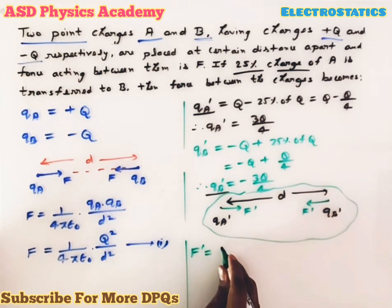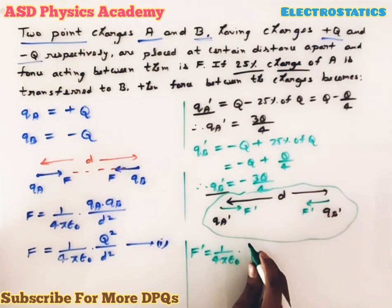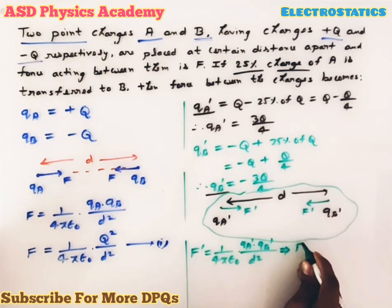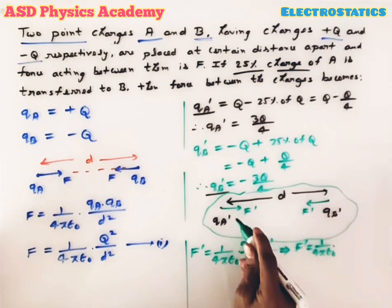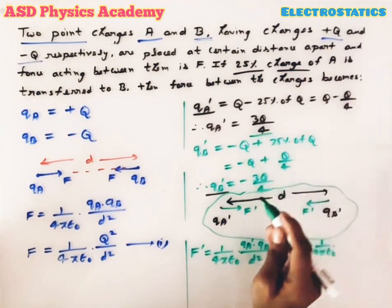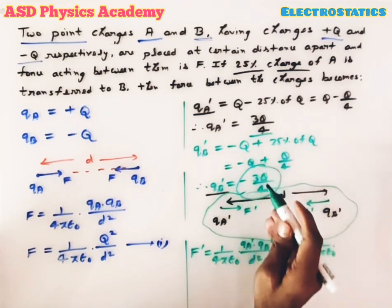F' = 1/(4πε₀) × qa' × qb' / d². Hence F' = 1/(4πε₀), qa' is 3q/4, qb' is -3q/4. One most important thing: we have to put only the magnitude, that means 3q/4 × 3q/4 / d².